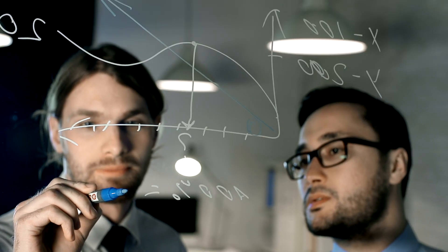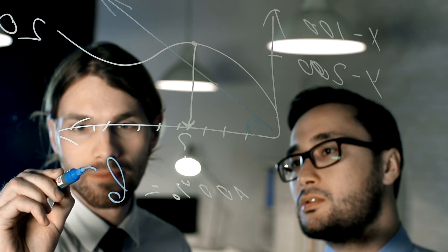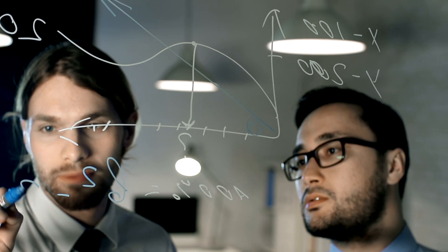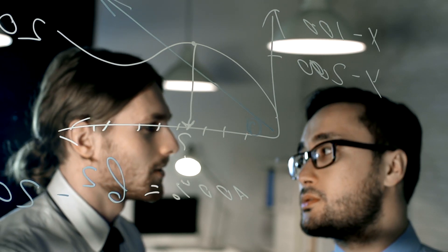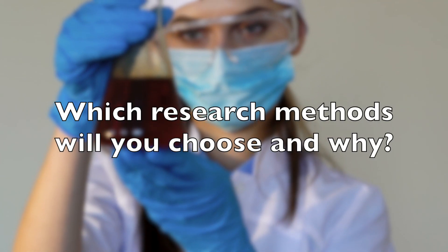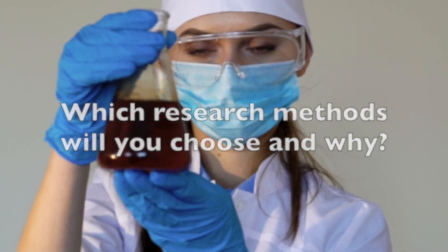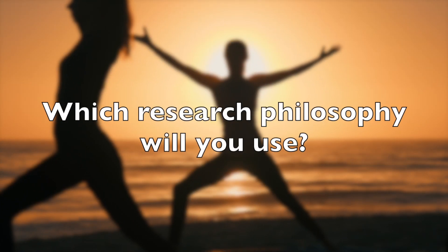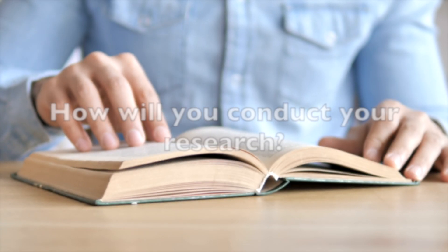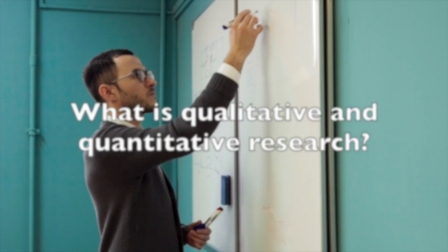So let's get straight to it — what does it mean? When you are undertaking primary research, i.e. collecting your own data, you will need to decide how you will do this. Which research methods will you choose and why? Which research philosophy will you use? How will you conduct your research? There are lots of different ways, but generally your research methods will fit into one of two categories: qualitative or quantitative.